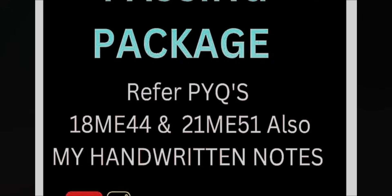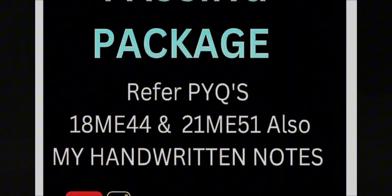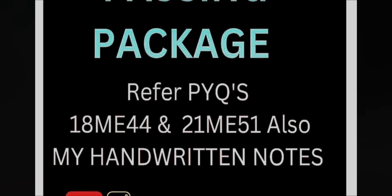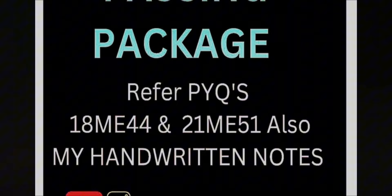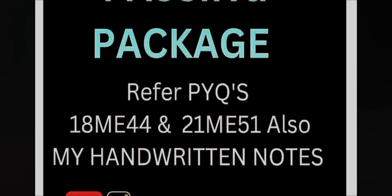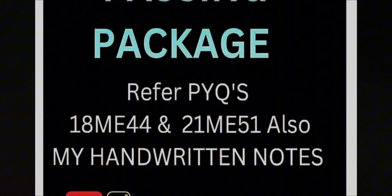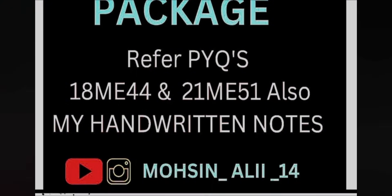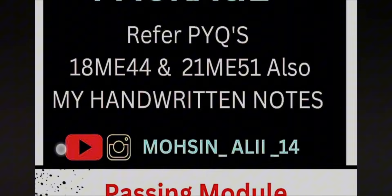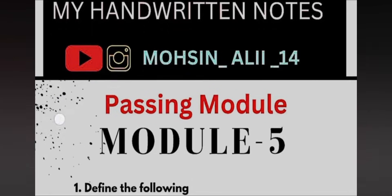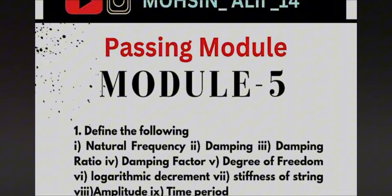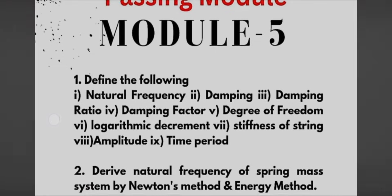As you know already, it is the combination of our two subjects, one is COM and next one is DOM. So these two subjects combination becomes your Theory of Machines. You can also refer the DOM papers for your reference and also refer my handwritten notes which I will show you later on.